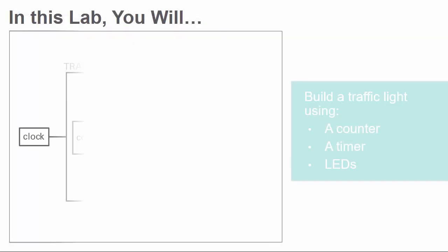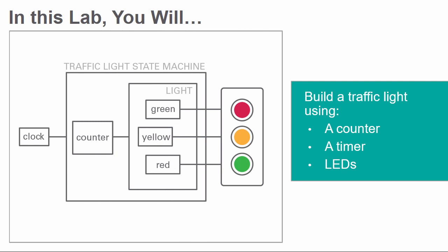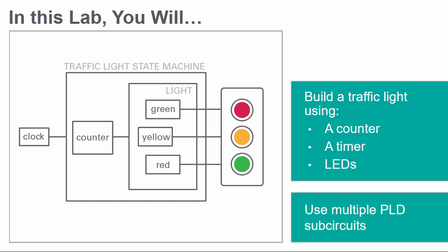In this lab, you will be building and testing your own finite state machine—a traffic light—in PLD. This design requires a counter, a timer, and LEDs, and will be split into multiple sub-circuits.